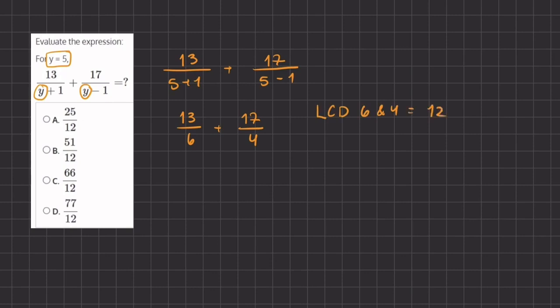To create a denominator of 12 in our first fraction, we multiply by 2 over 2. In our second fraction, we multiply by 3 over 3 to get a denominator of 12 in both.